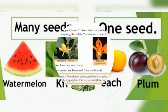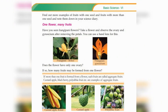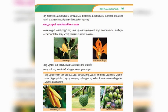Find out more examples of fruits with one seed and fruits with more than one seed. Have you seen Frangipani flowers? Take a flower and observe the ovary and gynoecium. After removing the petals, you can also use the hand lens. Does the flower have only one ovary? If more than one fruit is formed from a flower, such fruits are called aggregate fruits.